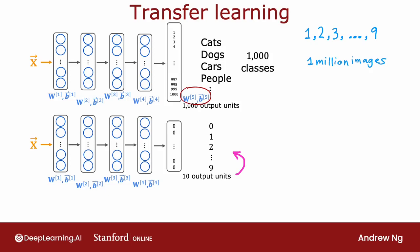Notice that the parameters W5B5 can't be copied over because the dimension of this layer has changed. So you need to come up with new parameters, W5B5, that you need to train from scratch rather than just copy it from the previous neural network. And in transfer learning, what you can do is use the parameters from the first four layers, really all the layers except the final output layer, as a starting point for the parameters, and then run an optimization algorithm such as gradient descent or the Adam optimization algorithm with the parameters initialized using the values from this neural network up on top.